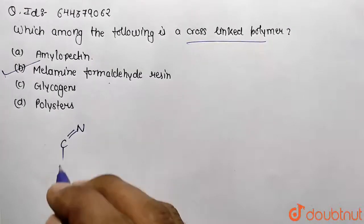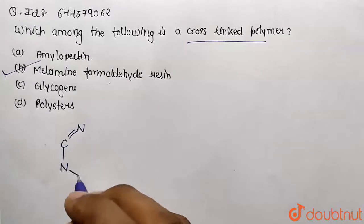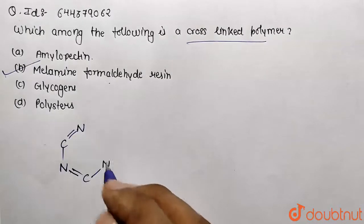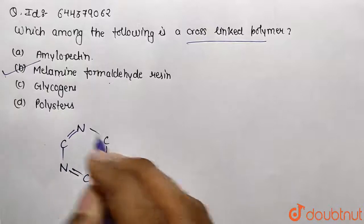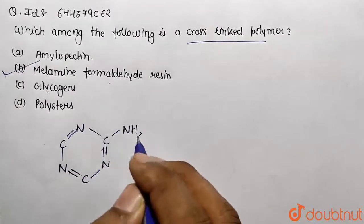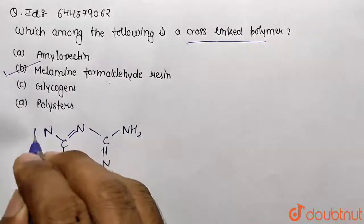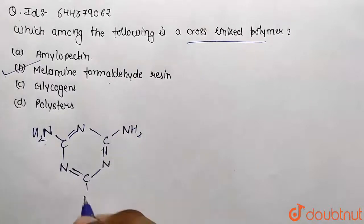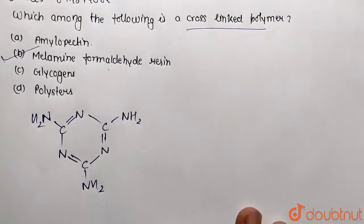Then we have C, then we have C and N, then we have double bond C, then we have N and double bond C, then we have this side. So NH2 is present over here, NH2 is present over here, and down also NH2 is present over here. So this is going to be called melamine.